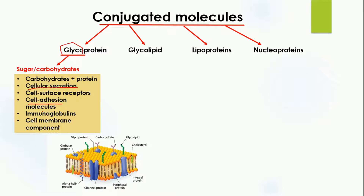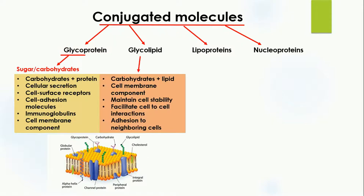Glycoproteins are also a component of immunoglobins, so they are involved in the defense of the body. They are also the main component of the cell membrane. Here in this structure of the cell membrane, you can see this is the glycoprotein — this part here is the protein, and this part here is the carbohydrate, so they both are combined together to form glycoprotein.